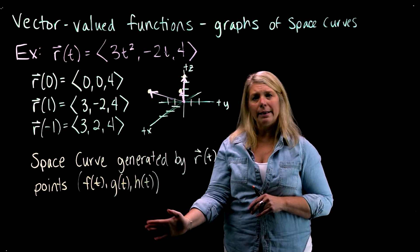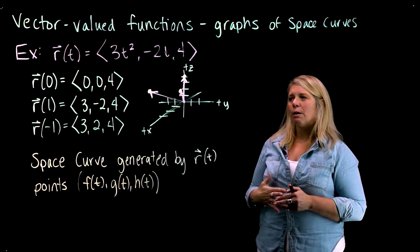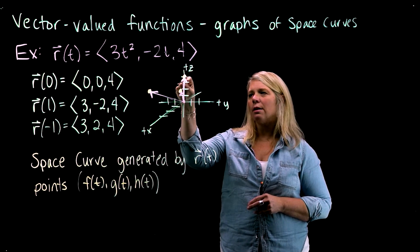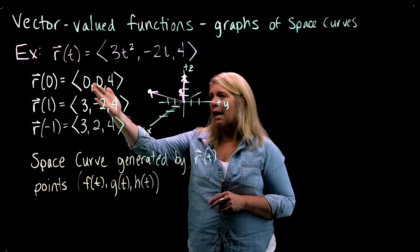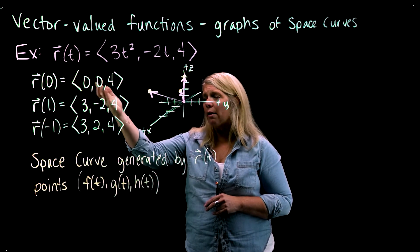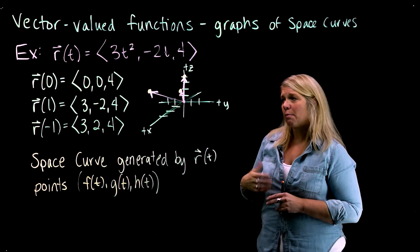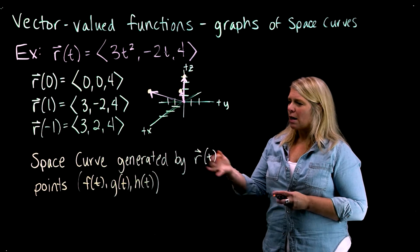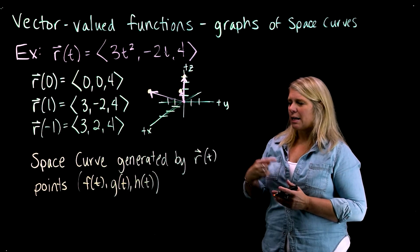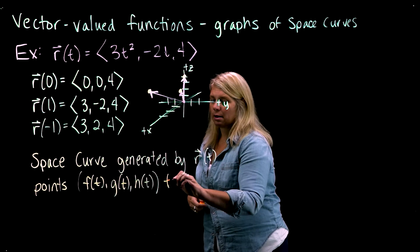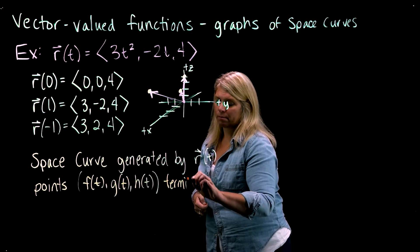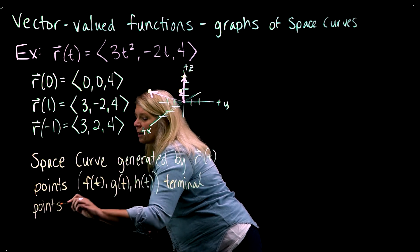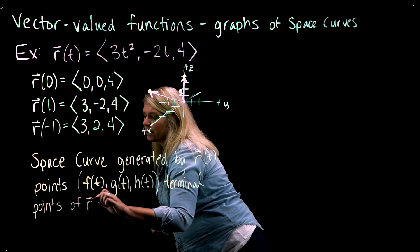would generate the z-coordinates of the points. So it might not seem like a big deal to distinguish between a vector and a point, and they do have this intimate relationship where if you're drawing these vectors with their tail at the origin, the terminal point of the vector is the same numerically as the components of the vector. But it is important that you distinguish between those things here. So a space curve generated by R of T is all of these points that are the terminal points of all of the vectors of R of T, outputs of R of T.